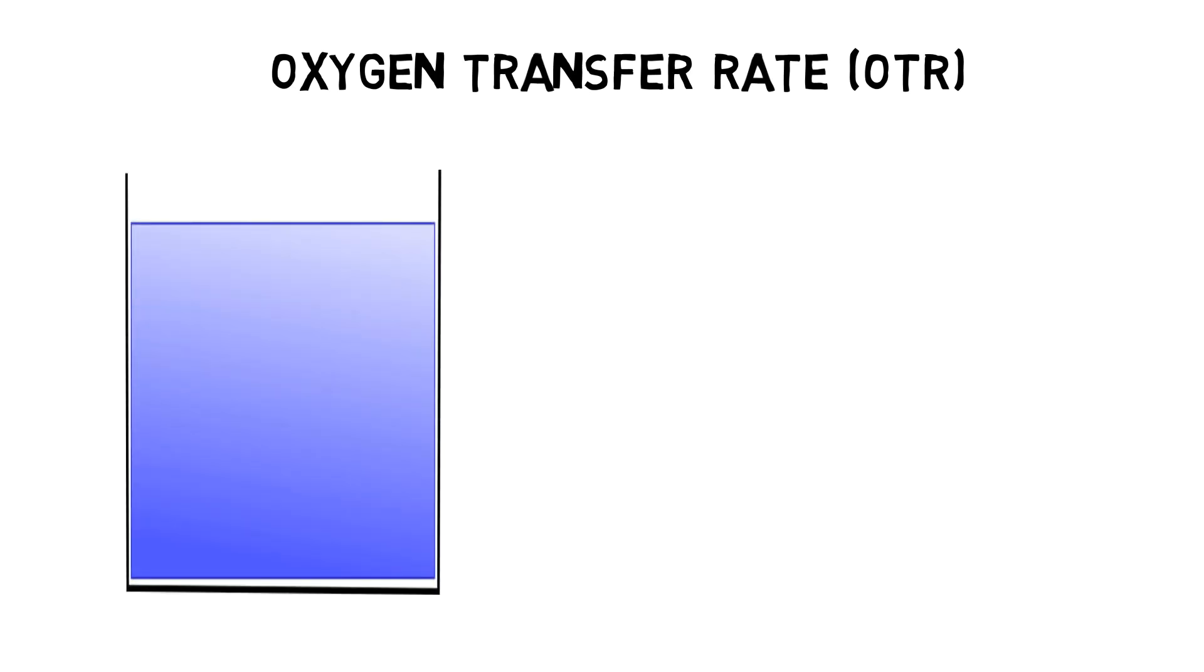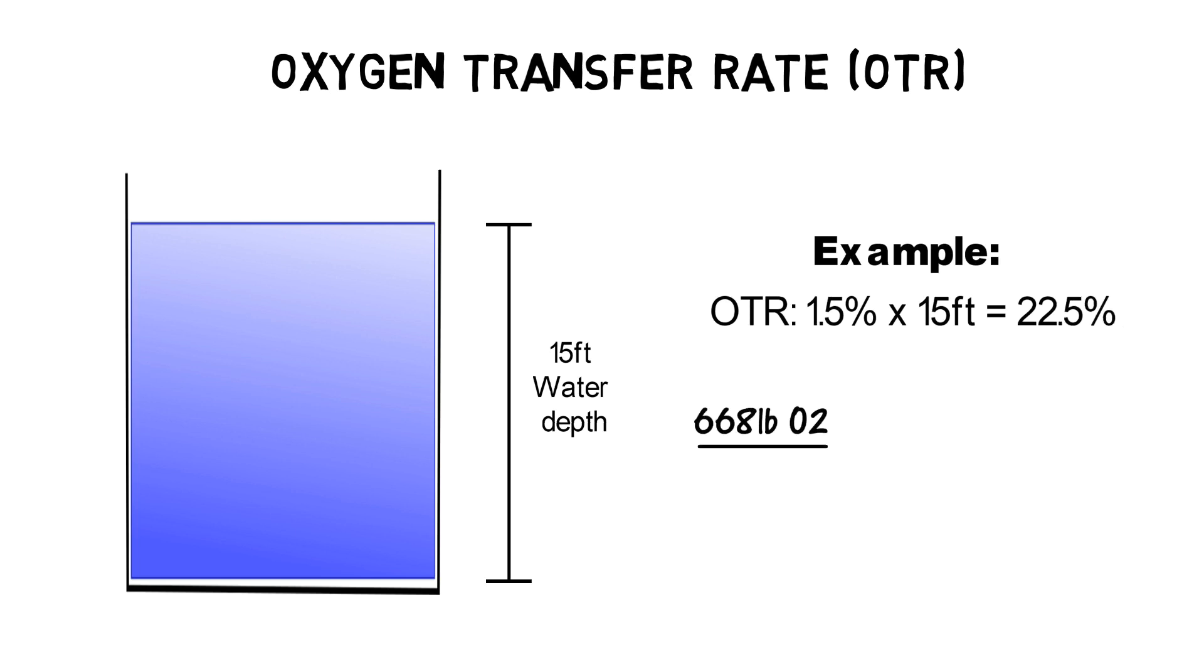For our example, let's assume we have 15 foot water depth which equals an OTR efficiency of 1.5 percent times 15 equals 22.5 percent. Therefore, the aeration equipment has to provide a total oxygen amount of 3,057 pounds per day.